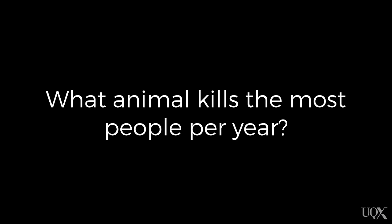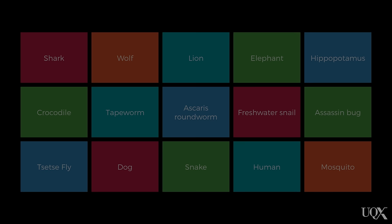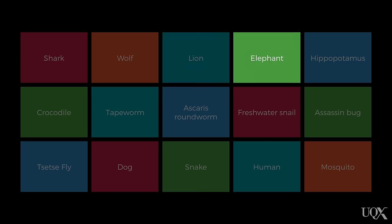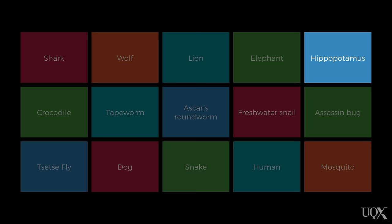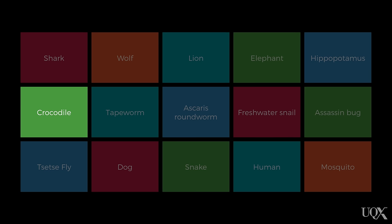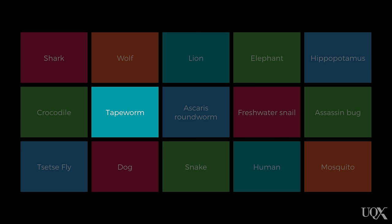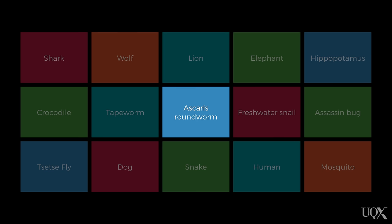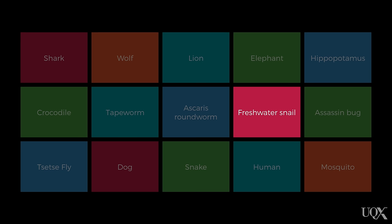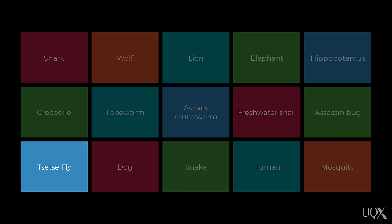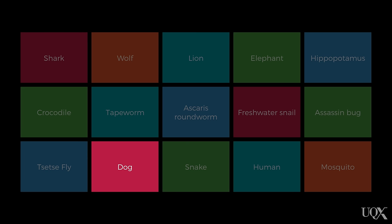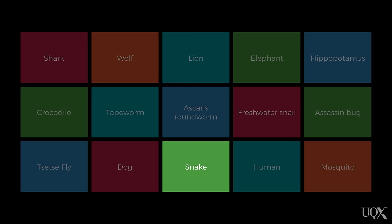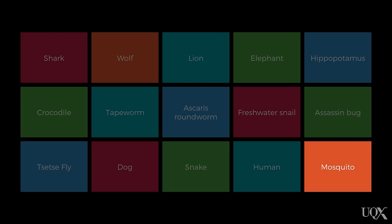The next question asked what animal kills the most people per year. The options given were: shark, wolf, lion, elephant, hippopotamus, crocodile, tapeworm, roundworm, freshwater snail, assassin bug, tsetse fly, dog, snake, human, or mosquito. Most people probably did not select mosquito.